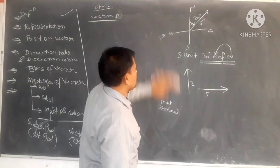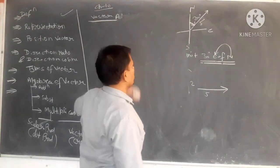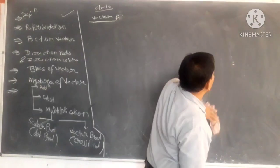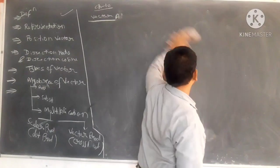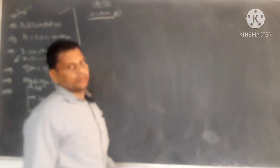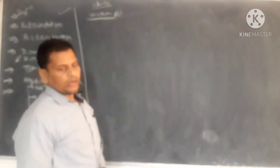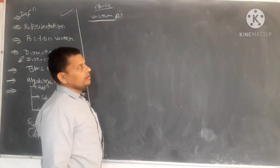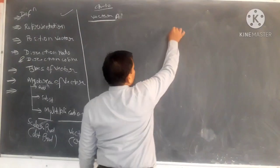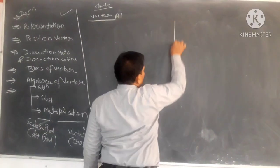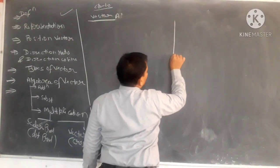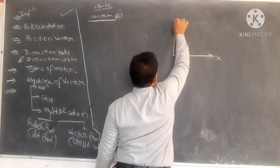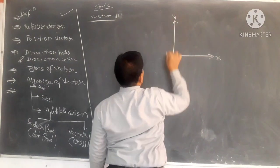Next one is a very important topic: position vector. This is also studied in physics. What is a position vector? It is a small concept. Let me show it in 2D. This is the x-axis and y-axis, and that is the origin.